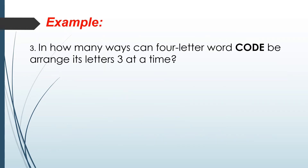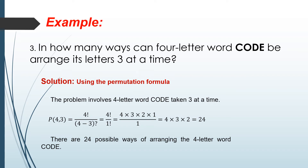In how many ways can the letters of the four-letter word CODE be arranged three at a time? Using the permutation formula, the problem involves four letters taken three at a time. So P(4, 3) equals 4 factorial over (4 minus 3) factorial, which equals 4 factorial over 1 factorial. Simplifying: 4 times 3 times 2 times 1 equals 24, and 1 over 1 is cancelled out. Therefore, there are 24 possible ways of arranging the four-letter word CODE.